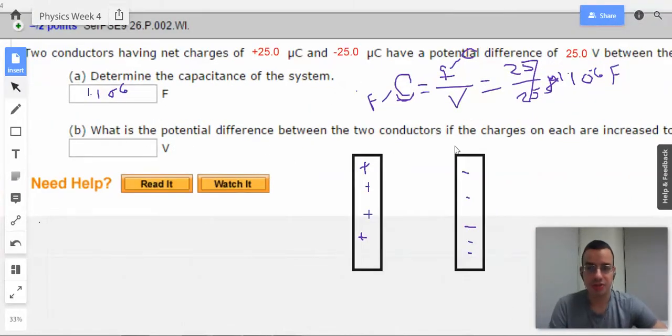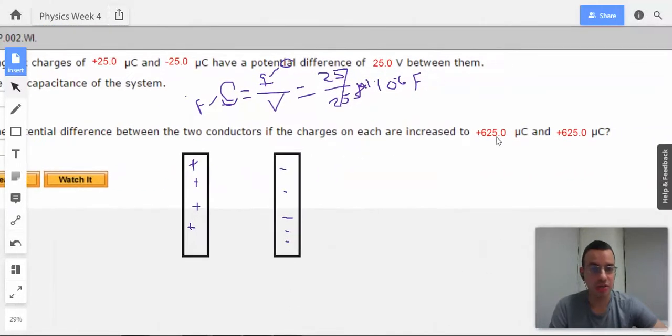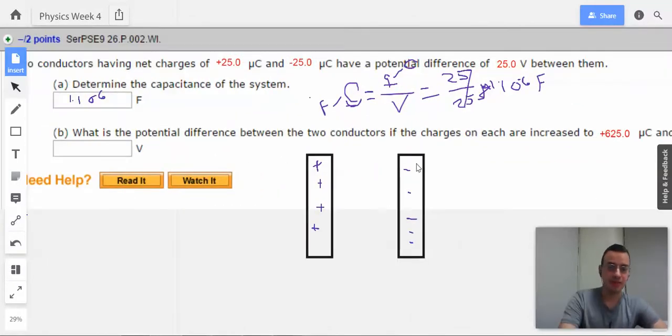Okay. What is the potential difference between the two conductors if the charges on each are increased to 625 microcoulombs? Okay.